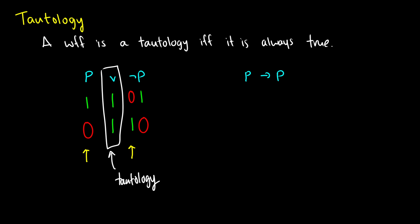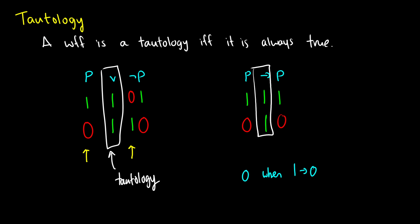Let's do p → p. Let's set up this truth table: one, zero for p. The conditional is only false when we have one arrow zero. In the first row we have one → one, it's true. In the second row we have zero → zero, it's true. Therefore, much like our first example, we have all ones in our final column. Therefore it is a tautology — it is always true.